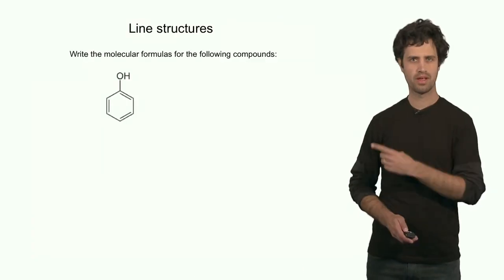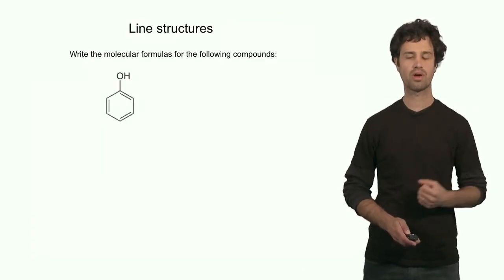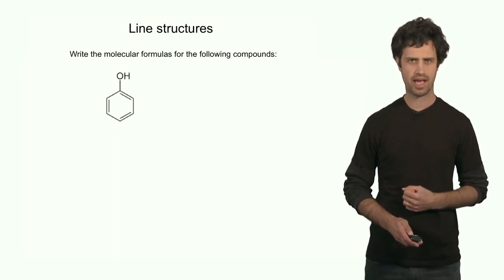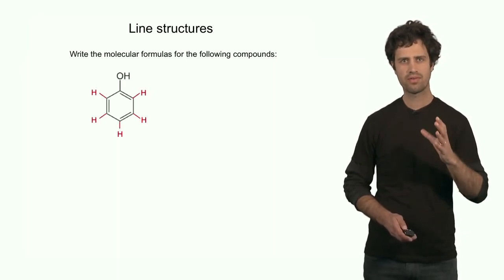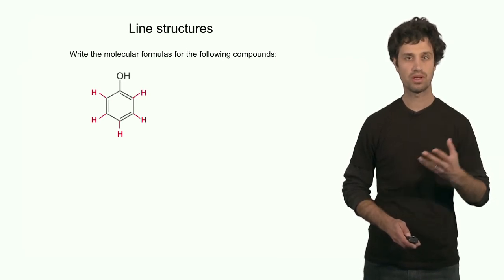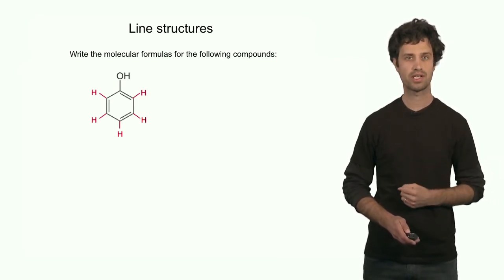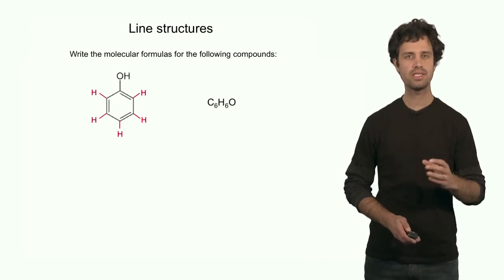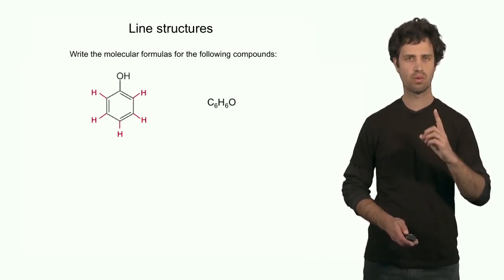Let's finish this segment by practicing a few more line structures and determining their molecular formulas. The first line structure has a total of six carbon atoms. It has five hydrogens on the ring and an extra one bound to the oxygen, so six hydrogens in total. It also has one oxygen, giving the molecular formula C6H6O.